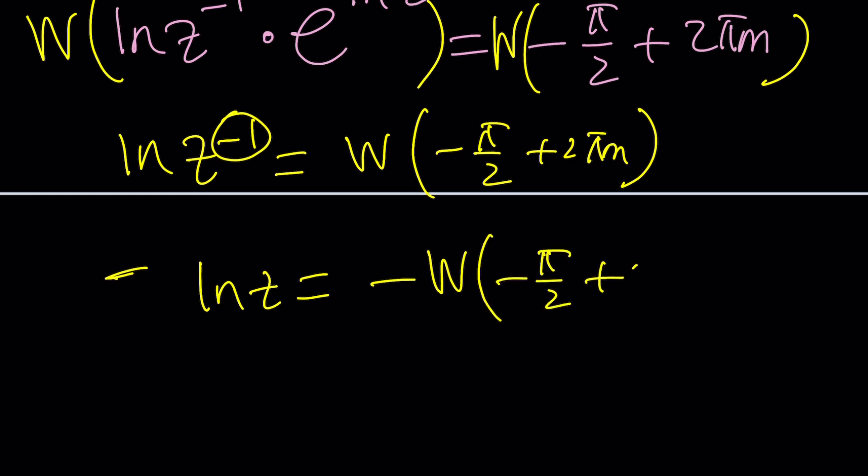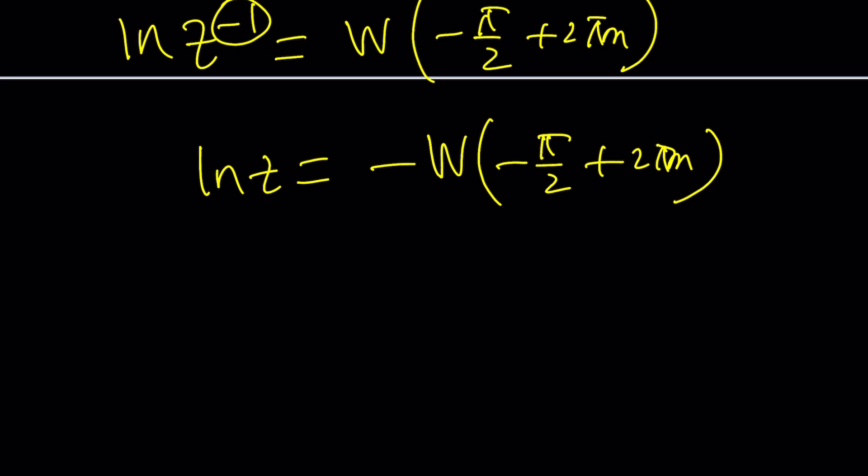Let me just write it in a more general form. And notice that I had to make an assumption for n equals 0. But without that, maybe it can be solved. And now we need to do e to the power of both sides. So z is going to be e to the power negative w of negative pi over 2 plus 2 pi m.